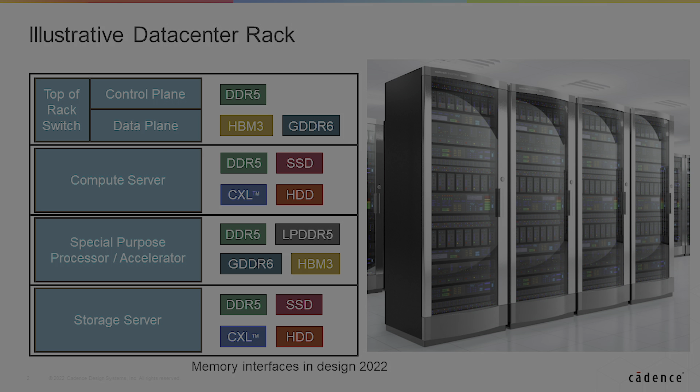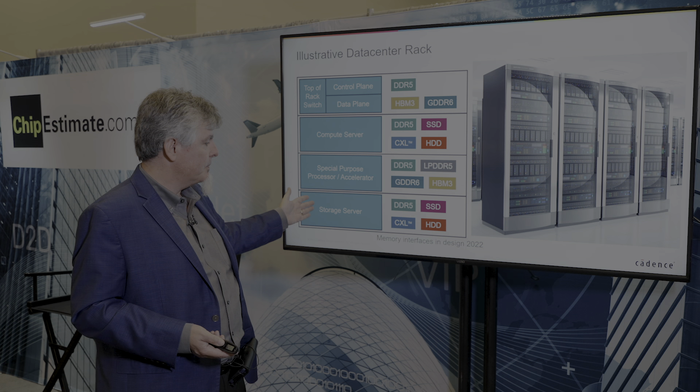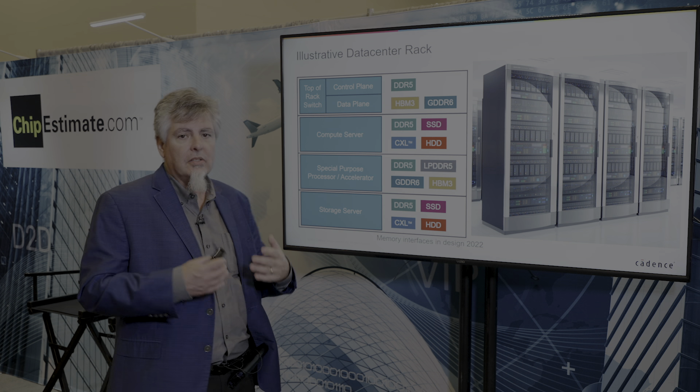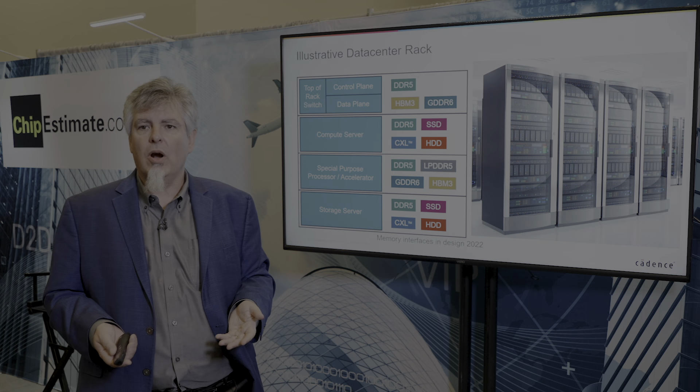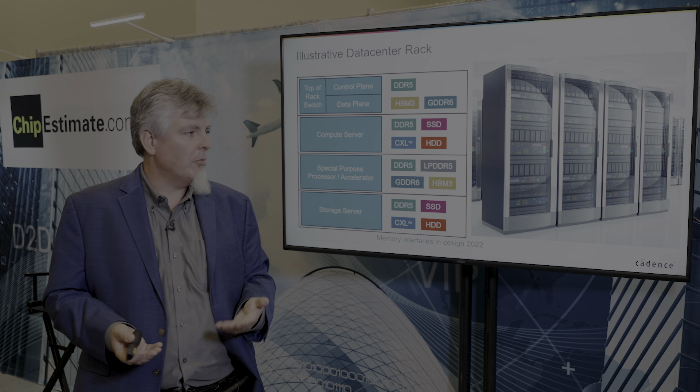If we look at this illustrative data center rack, I'm showing here four applications that might exist within a rack or within racks within the data center. These four applications that we might see: a top of rack switch, a compute server, a special purpose processor accelerator, and a storage server. All of those have slightly different requirements and they use different types of memory.